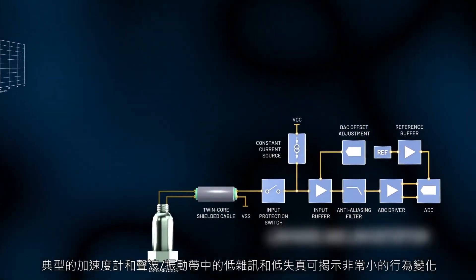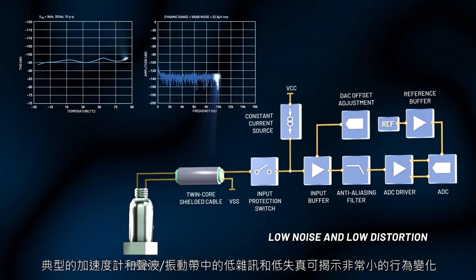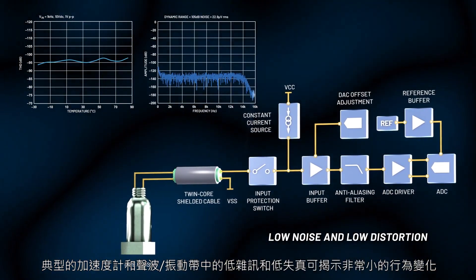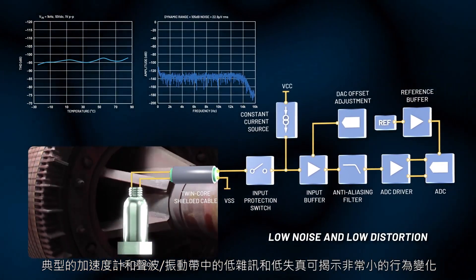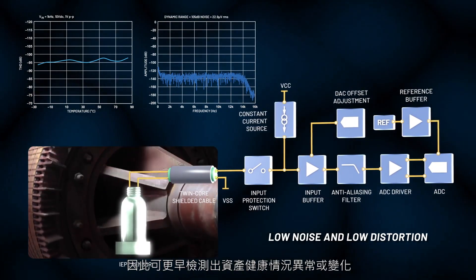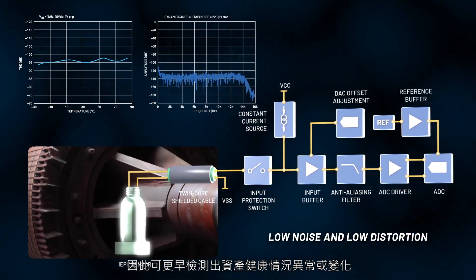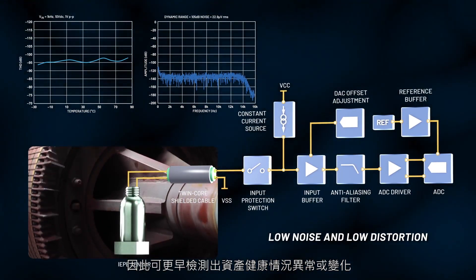The low noise and extremely low distortion across the typical accelerometer and acoustic vibration band exposes the smallest changes in behavior, so anomalies or changes in asset health can be detected earlier.